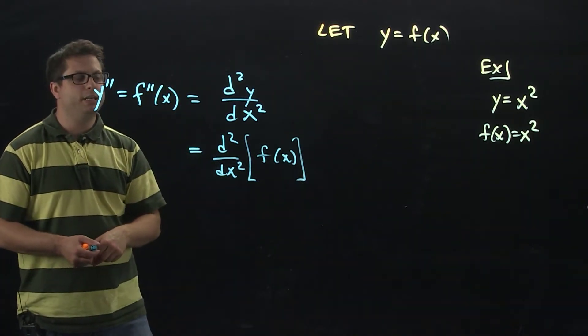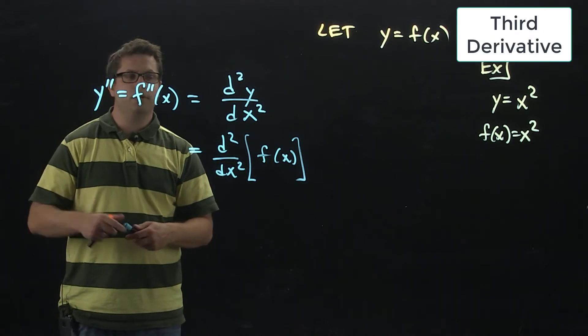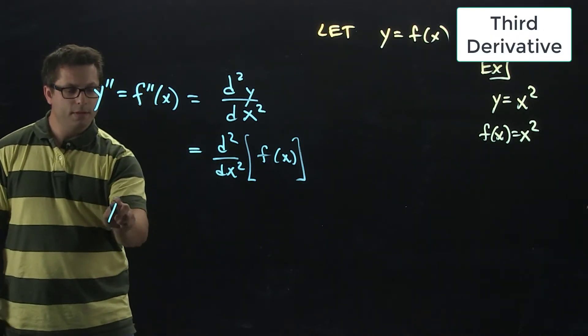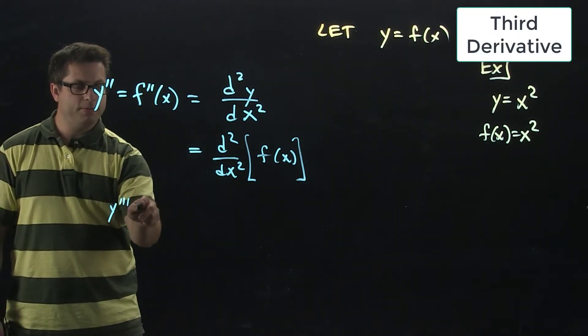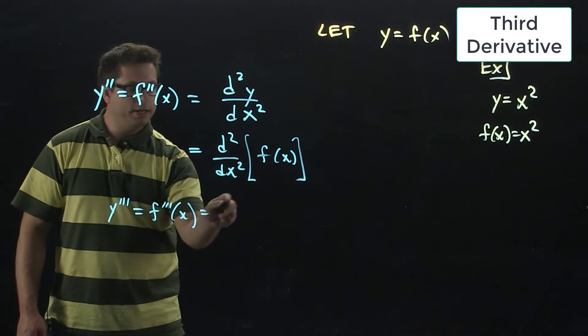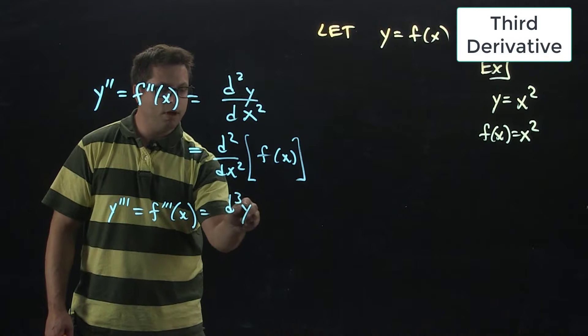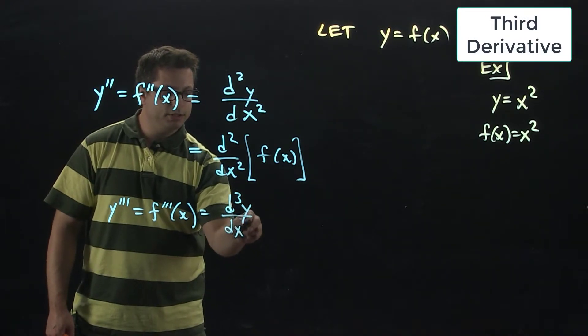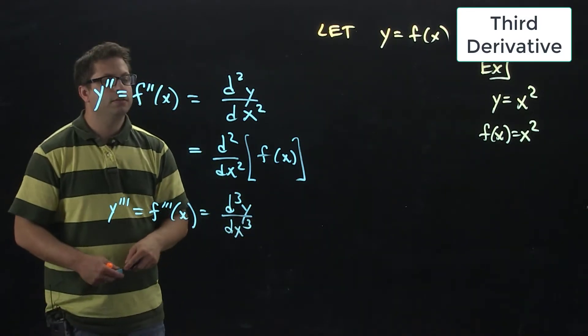Then if you wanted to keep going, say you wanted the third derivative. You would then use 3 primes. Here it would be d cubed y dx cubed and so on.